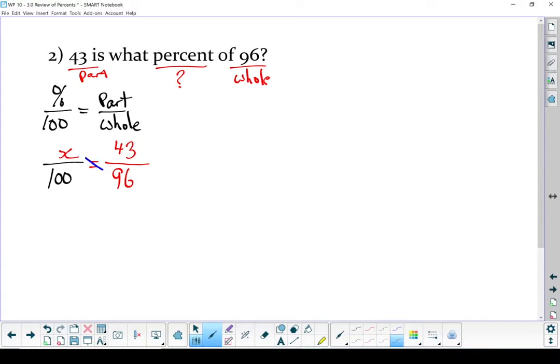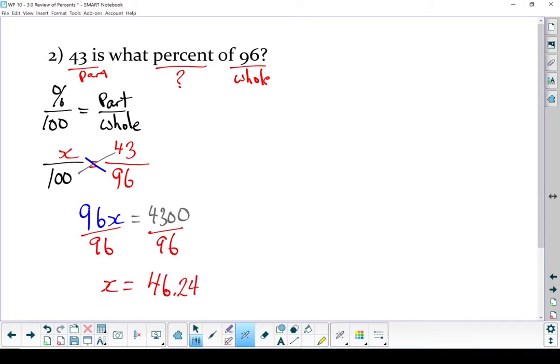If I cross-multiply, x times 96 and 100 times 43. Take both sides. Divide by 96. x equals 46.24. And once again, we were solving for a percent. So that's 46.24%.